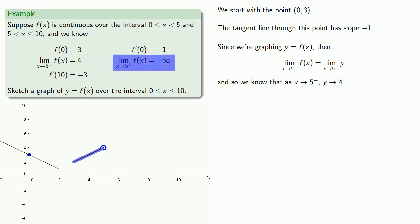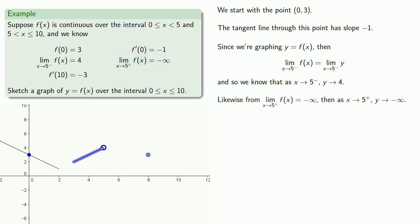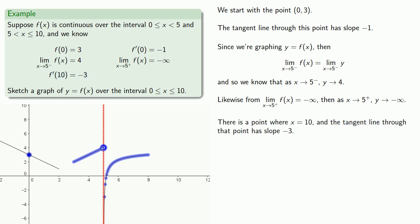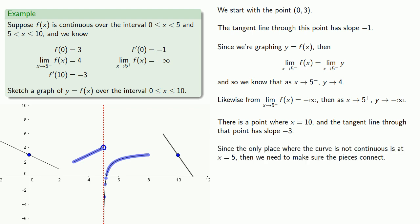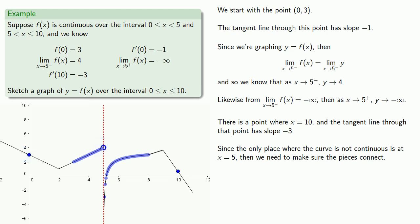We have this other bit of information about the limit as x approaches 5 from the right, and from this we know that as x gets close to 5 but stays a little bit to the right of it, y goes to minus infinity. Notice this also means we have a vertical asymptote at x equal to 5. And finally, the last bit of information tells us that there is a point where x equals 10 and the tangent line through that point has slope negative 3. So we don't know exactly where that point is except that its x value is 10, so we'll put a placeholder point and run a line with slope negative 3. Since the only place where the curve is not continuous is at x equals 5, we need to make sure the pieces connect. We'll adjust our pieces, keeping in mind that there are two fixed points: (0, 3) and the limit point at x equals 5 where y approaches 4.